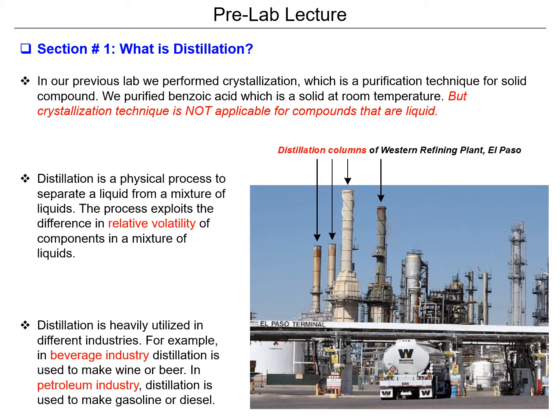From crude oil, we get benzene, we get so many fuels — kerosene and naphthalene. All these come from a single source, but because of their different boiling points, they are separated by means of distillation.